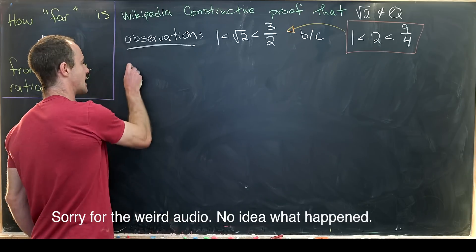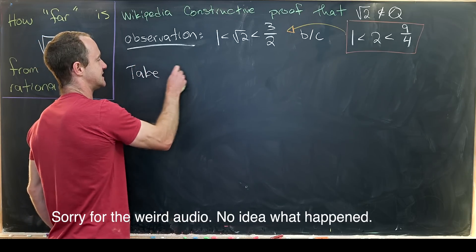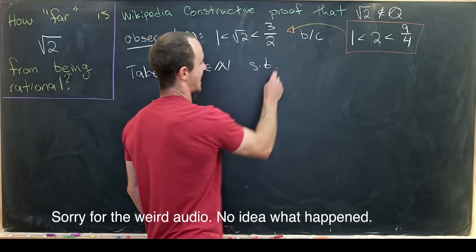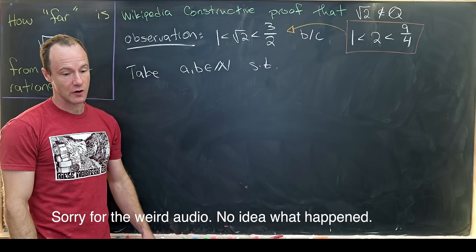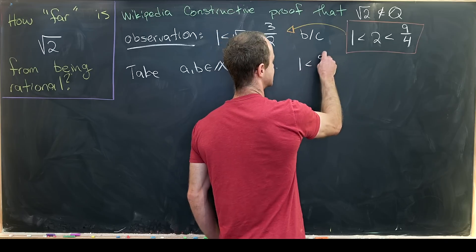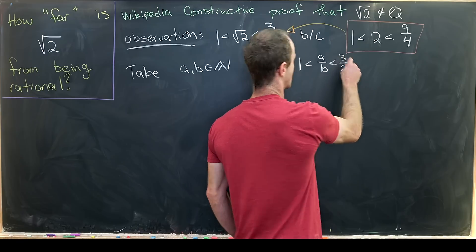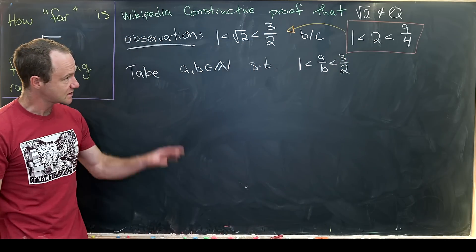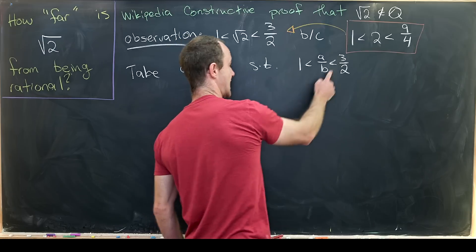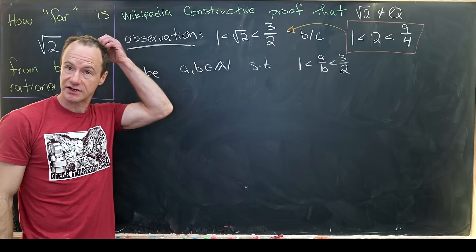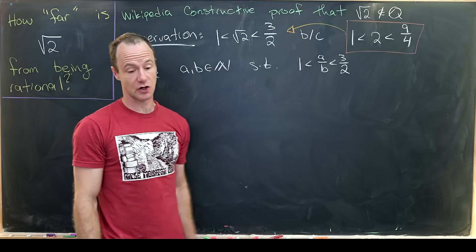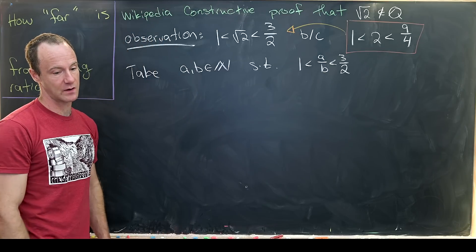From there, we want to take natural numbers a and b such that the quotient a/b is in the same range — that is, 1 < a/b < 3/2. So we have the square root of two in this range, and a/b in this range. We're not assuming anything about a and b except that their quotient is between one and one and a half.